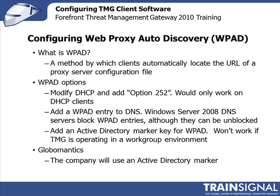There are a number of ways you can configure WPAD. You can add an entry to your DHCP server called Option 252, but that only works if you're using a DHCP client. GlobalMantics has all statically assigned IP addresses. You can also add a WPAD entry to DNS.